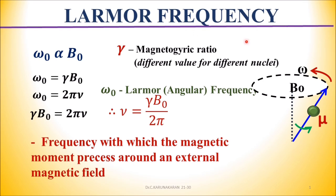Let us see, what is Larmor frequency? It is the rotational frequency of the nuclear magnetic moments. Larmor frequency is represented by W0. It is the rotational frequency of the nuclear magnetic moment around an external magnetic field.